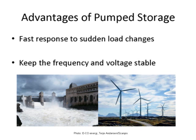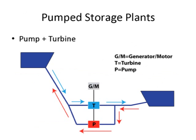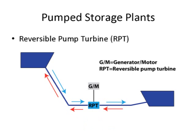What do we know about pump storage plants? We know that they can give a fast response to sudden load changes, thereby keeping the frequency and voltage stable on the grid. There are two kinds. You can have a separate pump and turbine, which gives high efficiency in both modes but is more expensive because you need separate machines and more waterways. The second solution is a reversible pump turbine — one machine, one waterway — with slightly lower efficiency. That is the solution I'm going to talk about for the rest of this presentation.